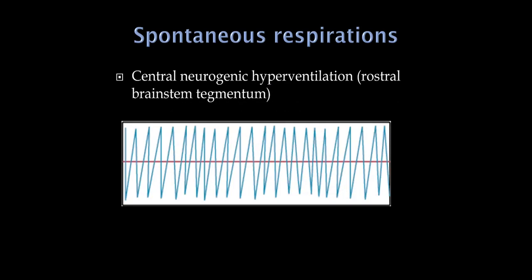As the brain herniates and pressure gets transmitted down to lower areas of the brainstem, the patient may go from Cheyne-Stokes respirations to central neurogenic hyperventilation as the pressure reaches the midbrain — suggesting an upper brainstem or midbrain lesion — where now we just have a patient continuously hyperventilating.